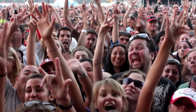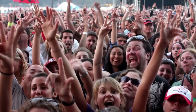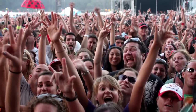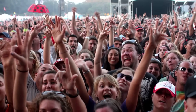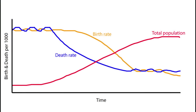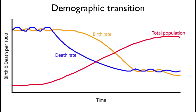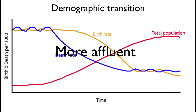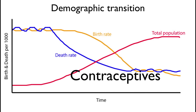Up until the present day it seems that history proved Ehrlich and other doomsayers wrong, since the mass starvations predicted for the latter quarter of the 20th century never occurred. One of the important factors that Malthus could not have foreseen was the demographic transition — a shift in population development from high birth rates and high mortality during the pre-industrial age to low birth rates and low mortality during the post-industrial age. This transition is attributed to a more affluent and better-educated population that has access to contraceptives.